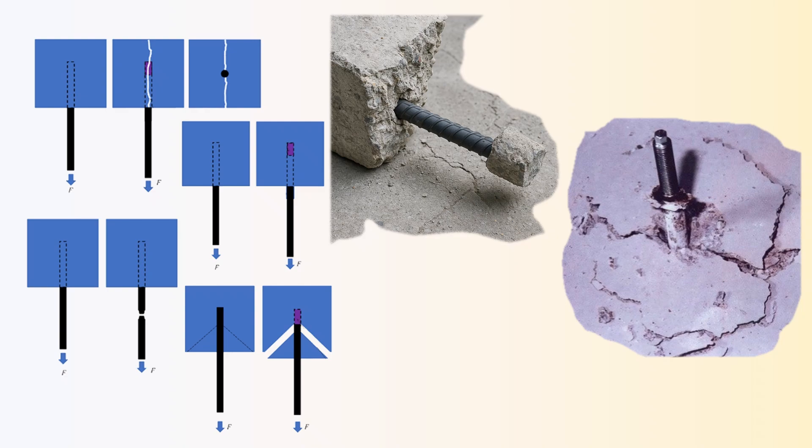You could have a perfectly designed beam, correct flexural capacity, enough shear reinforcement, proper detailing. But if the rebar slips out because it wasn't developed properly into the support, all that design work means nothing.